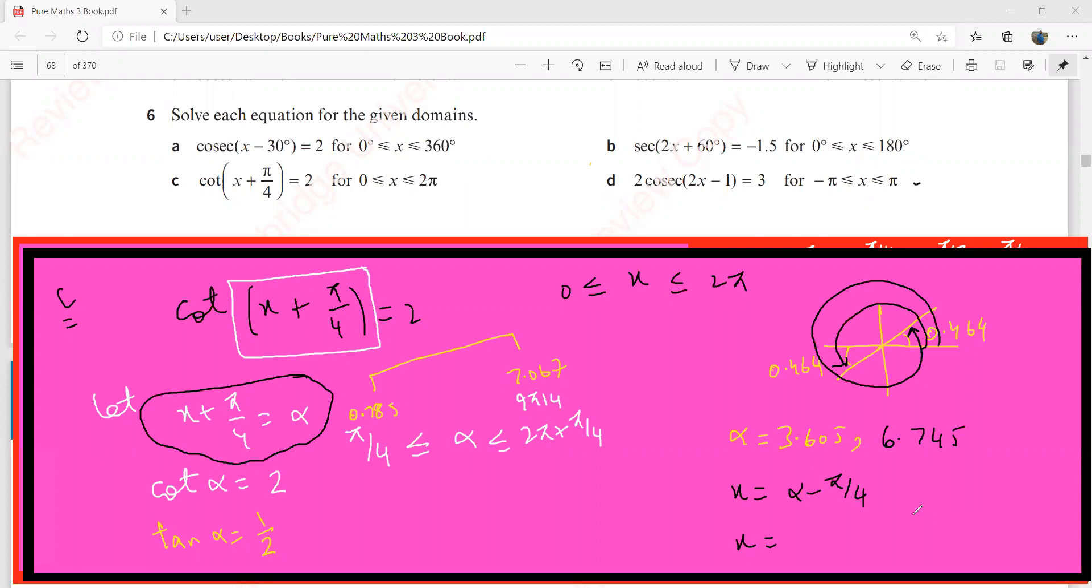Since we were looking for x, my x would be alpha minus π by 4. Subtract π by 4 from each. These radians should be correct to three significant figures. This one is 3.605, which gives 2.82. These are the two solutions for this equation. We'll keep our lesson up to this. See you in the next segment.